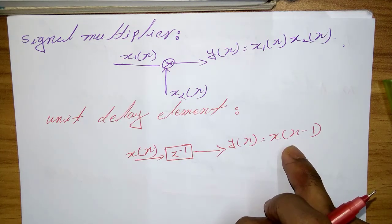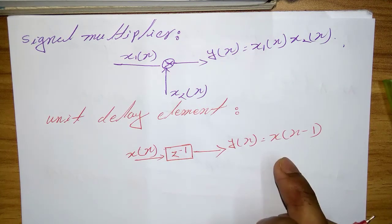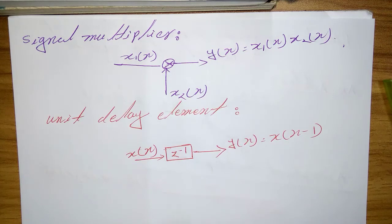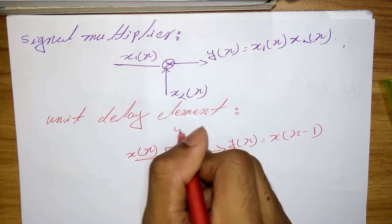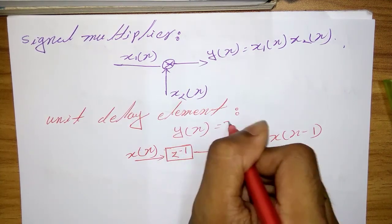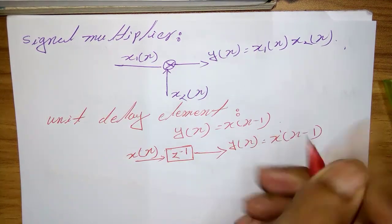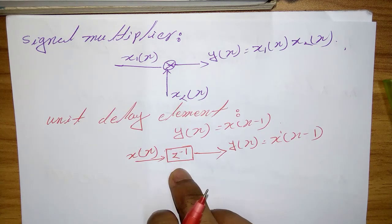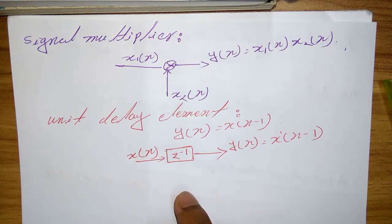In fact, the sample x(n-1) is stored in memory at time n-1, and it is recalled from memory at time n. This basic building block requires memory. The use of symbol z^(-1) to denote the unit delay will become apparent when we discuss the z-transform.